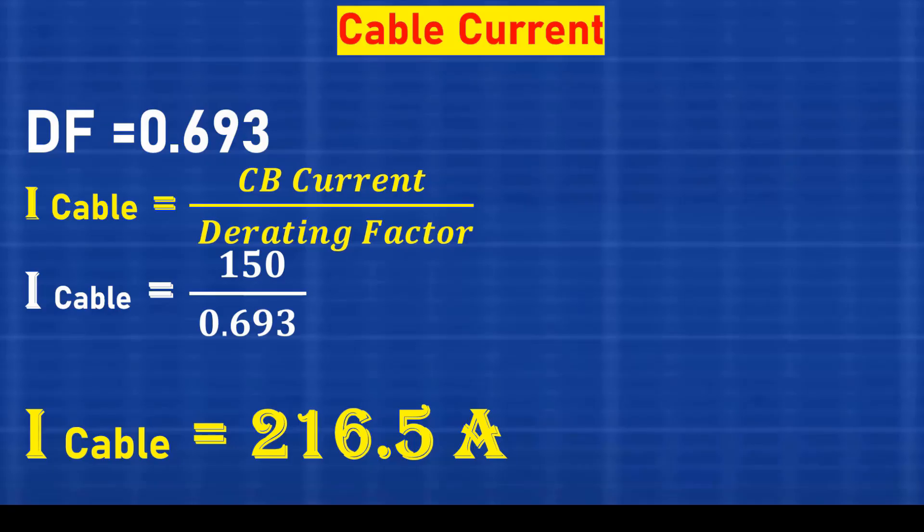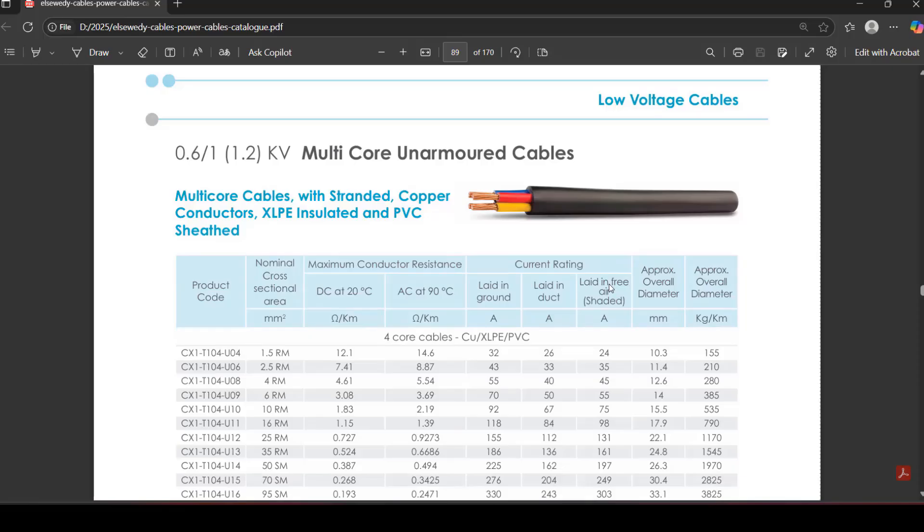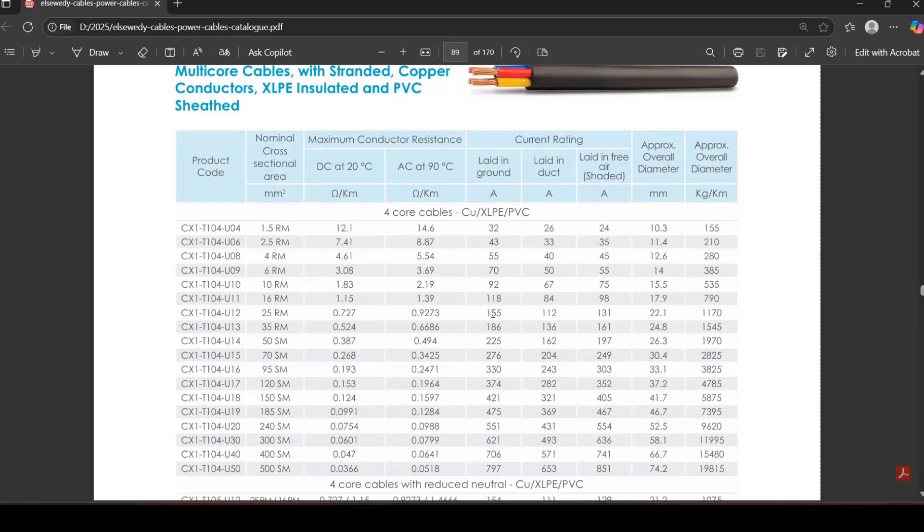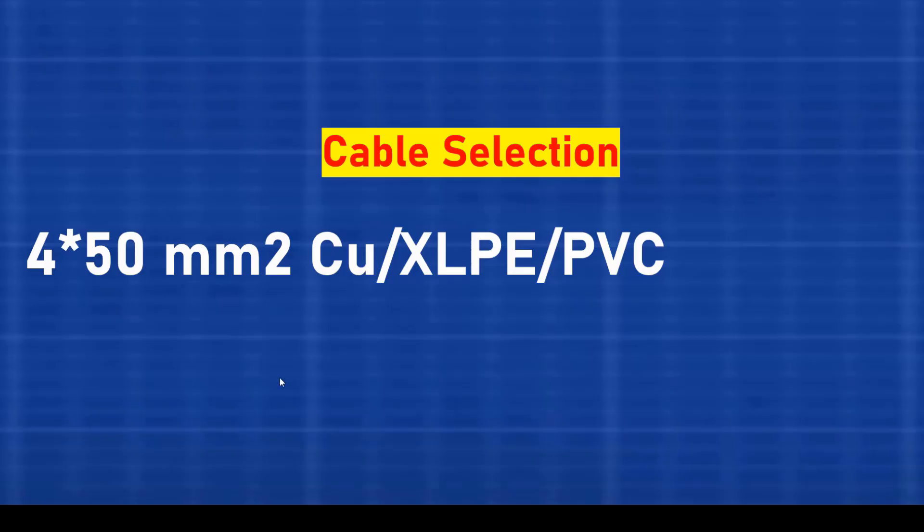Next, we select the cable from the catalog. We need a cable that carries 216 amperes or more when buried underground. We find that a 50 square millimeter copper cable carries 225 amperes. So, the suitable cable is 4 cores, 50 square millimeters copper with XLPE over PVC insulation.